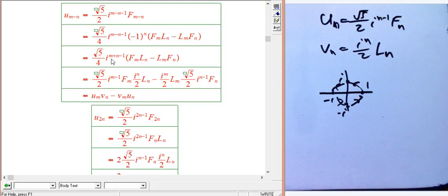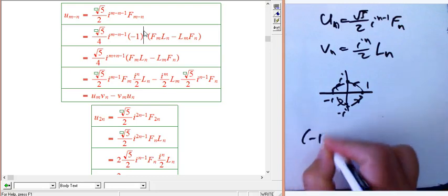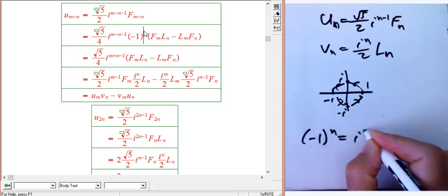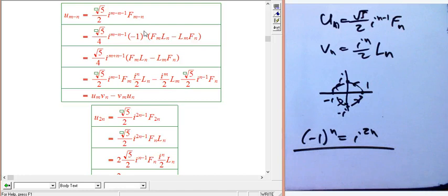So again, what we're going to do here is we're going to take minus 1 to the n. That's really i to the 2n. So here, we want to be pretty fluent with our complex numbers. And that's going to change m minus n minus 1 to m plus n minus 1, which is exactly what we need to split it up into i to the n minus 1 with here, and i to the n with the L_n. And it all works out beautifully.